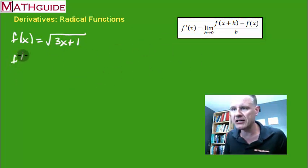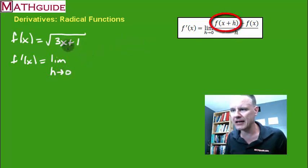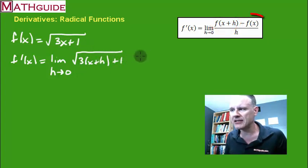So the definition says the derivative is the limit as h approaches 0. And it says I've got to replace the x with x plus h. And I still got that plus 1. And then it says I have to subtract the function. And there you go. I'm going to subtract the square root of 3x plus 1. Here's the definition.